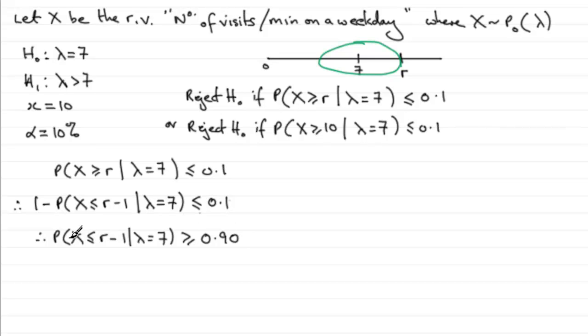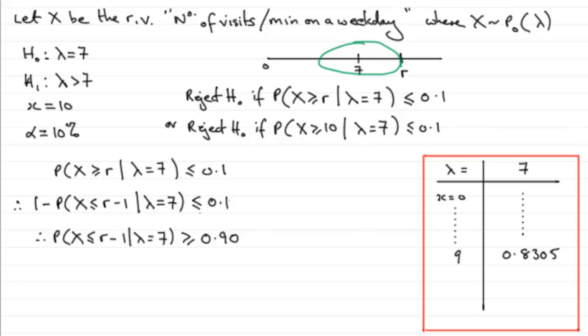Now this puts us in touch with the tables, the cumulative Poisson tables. So if we look at the tables now, we need to look under 7, where lambda equals 7, and look at our probabilities, and look for a value that is greater than or equal to 0.90.